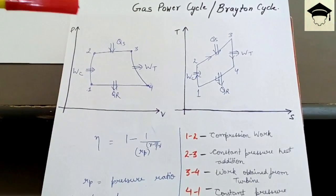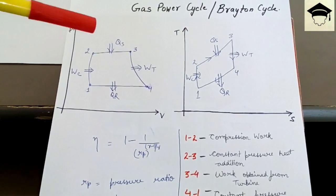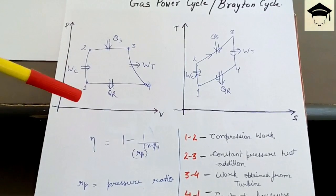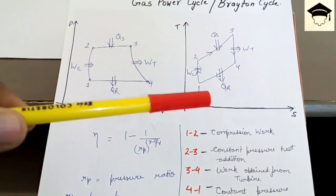So Brayton cycle because Brayton was a scientist who discovered this cycle and so the cycle is named after him. And this is the PV diagram or the pressure volume diagram and this is the TS diagram or temperature entropy diagram.